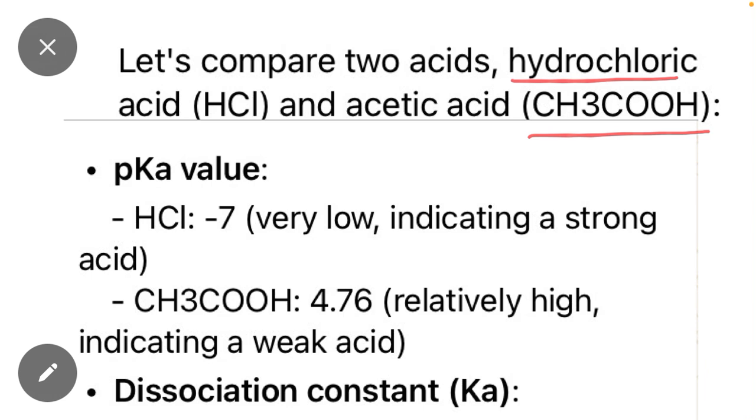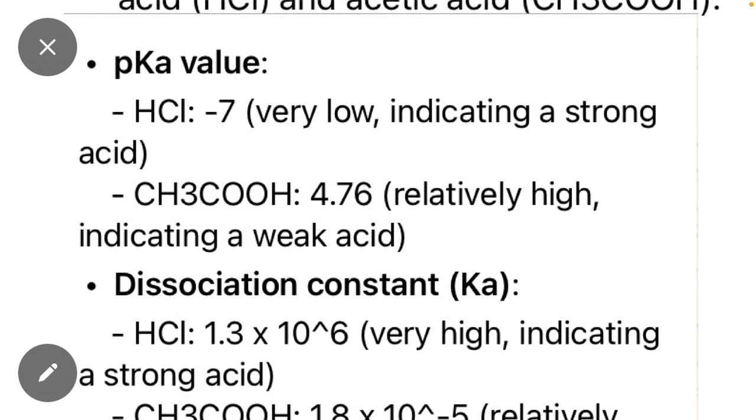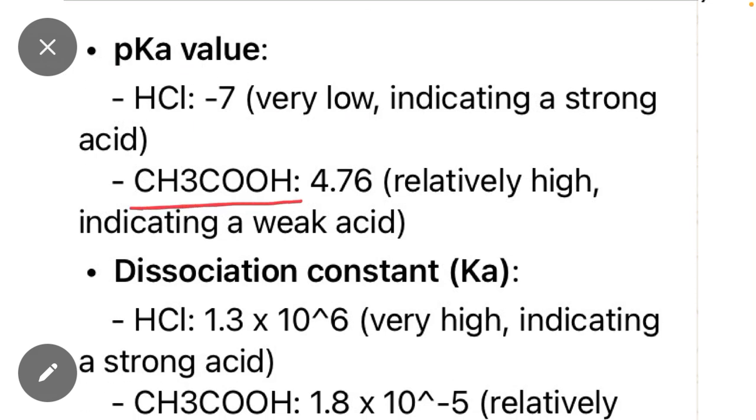pKa value: first of all, the pKa value of HCl is minus seven, a very low value, which indicates a strong acid. We already read that the acid having pH value that is low will be a strong acid. Similarly, CH3COOH has a pH value of 4.76, meaning it is a relatively weak acid.